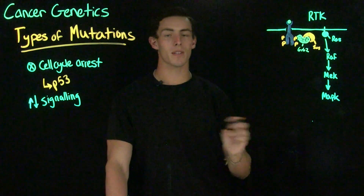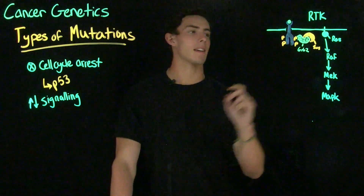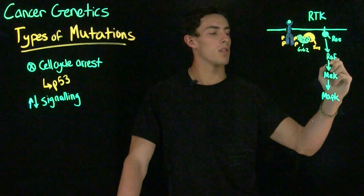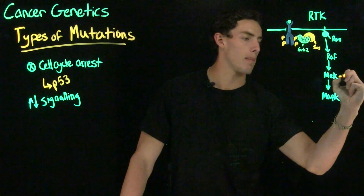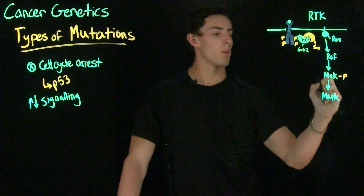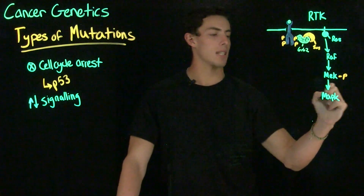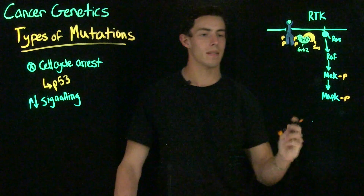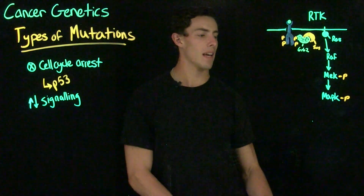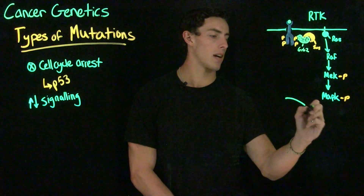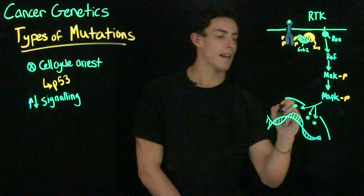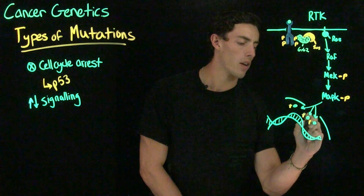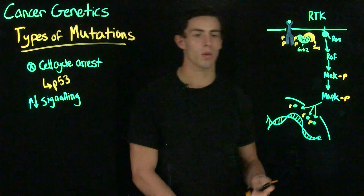SOS activates a protein called RAS. RAS is a GTPase but it is not a kinase. RAS will activate a protein called RAF, which is a kinase, which will activate MEK by phosphorylating it, which will then activate MAP kinase by phosphorylating it. This phosphorylation cascade concludes in the nucleus when MAP kinase phosphorylates certain transcription factors such as FOS, JUN, or MYC.